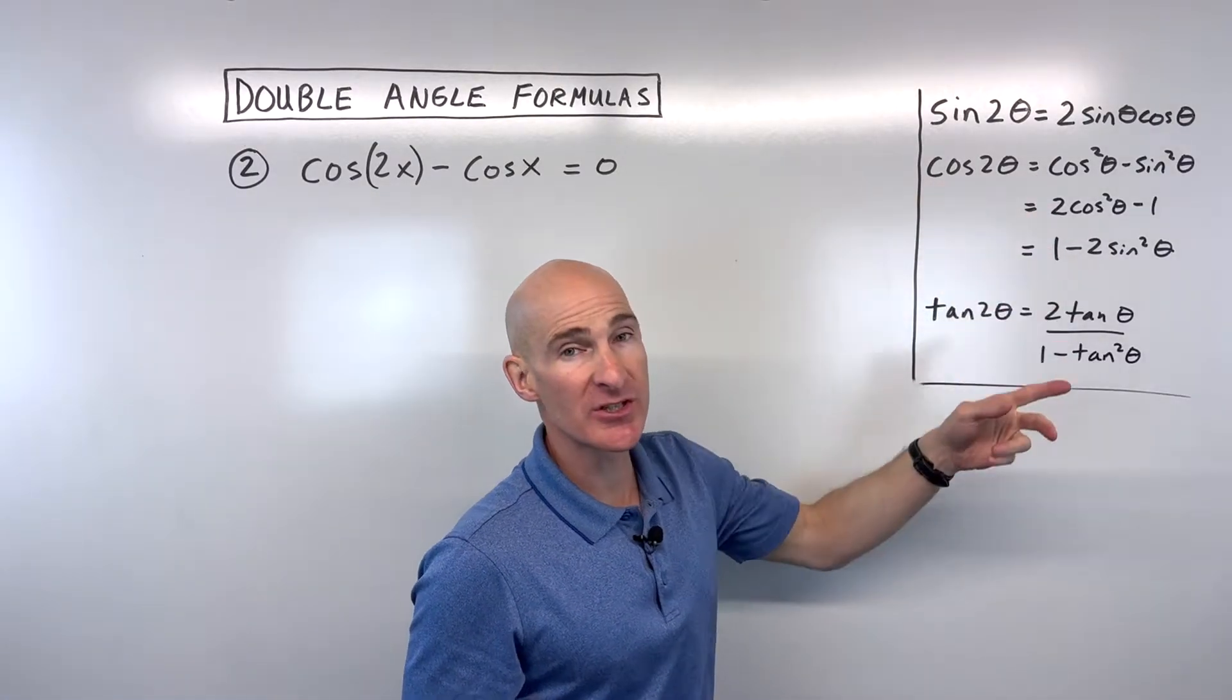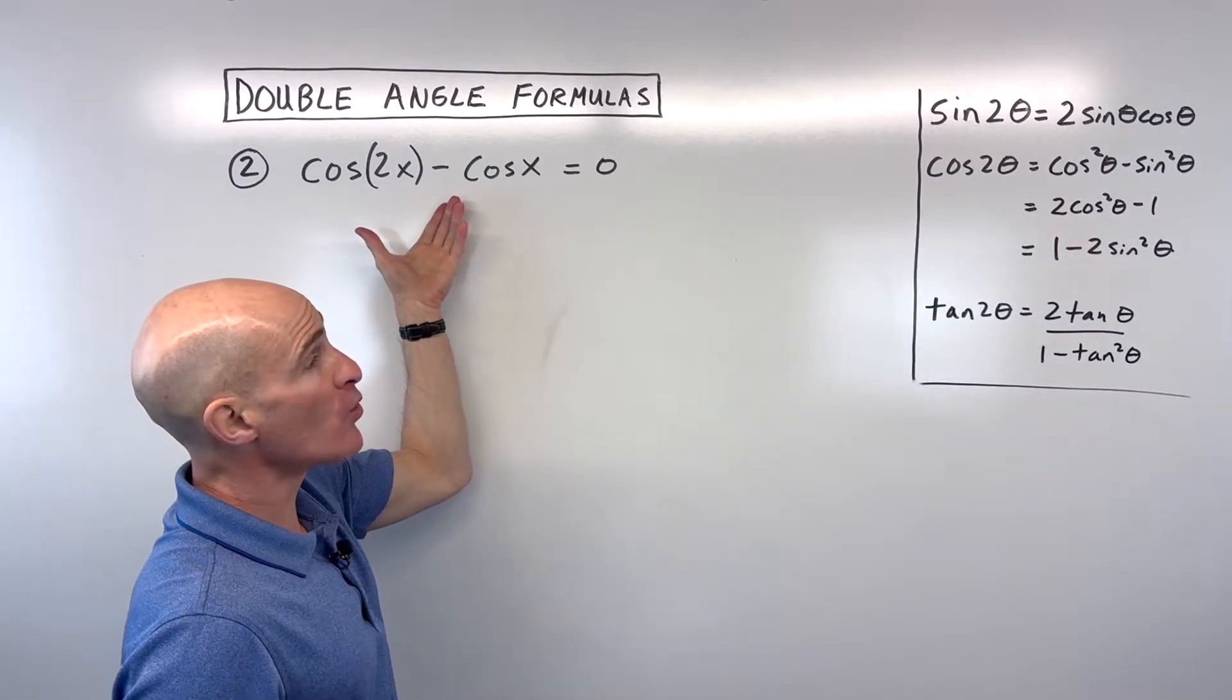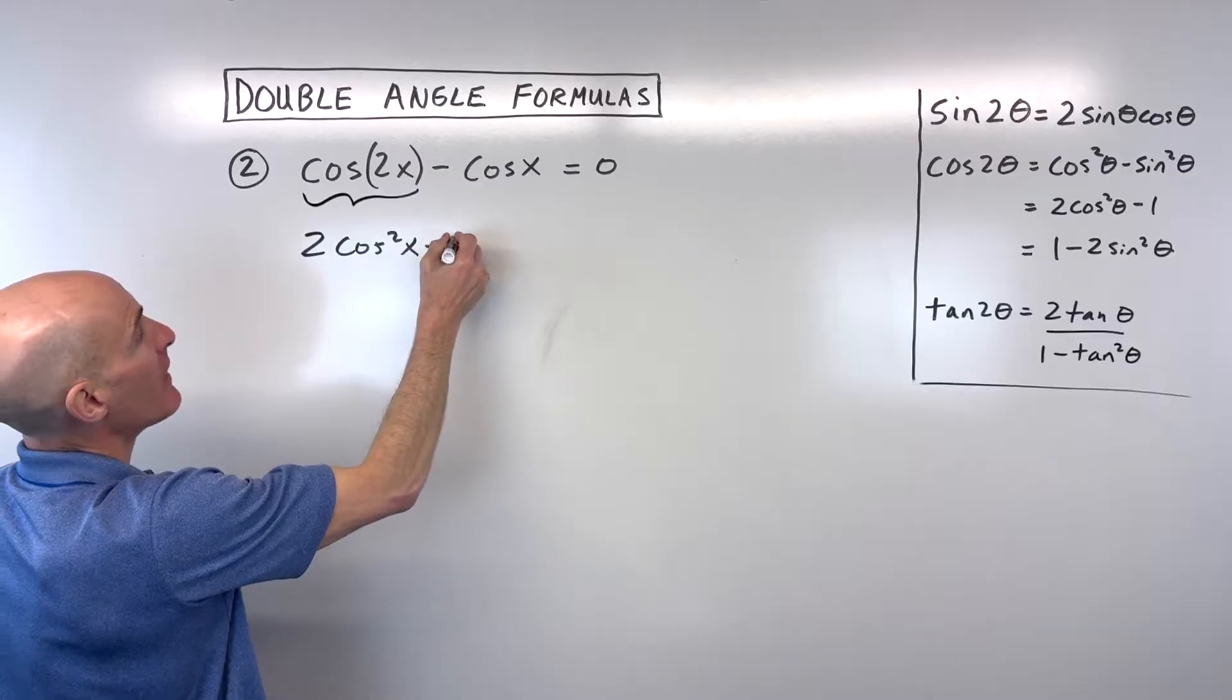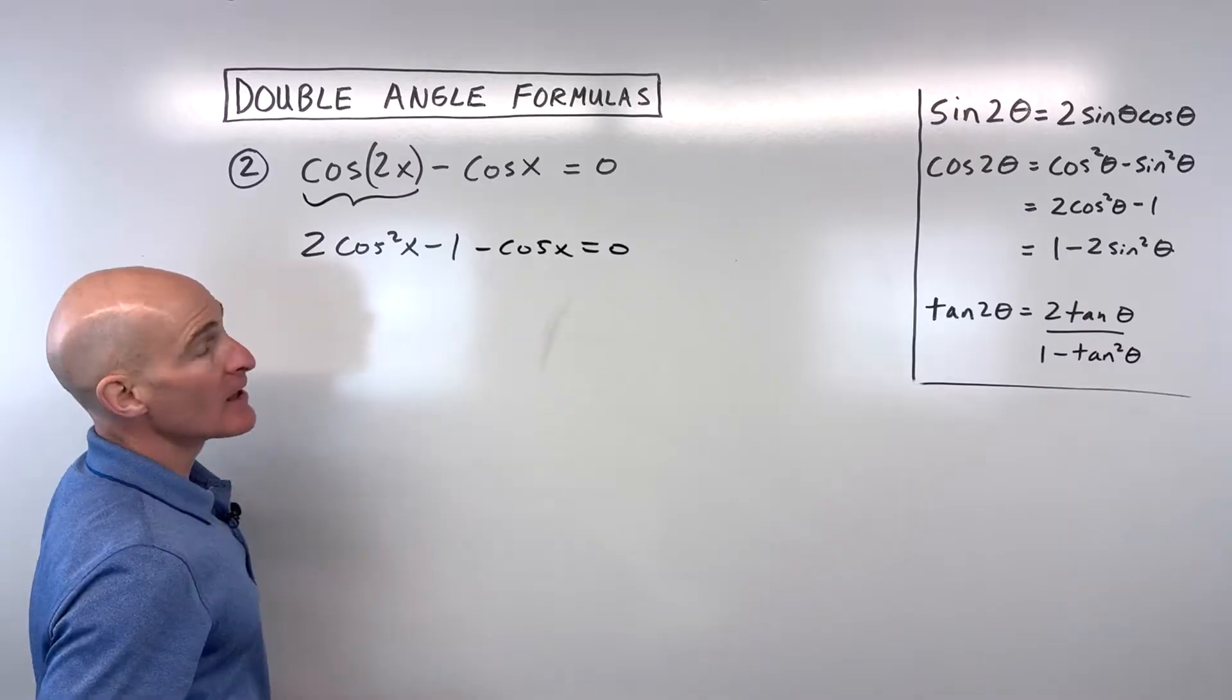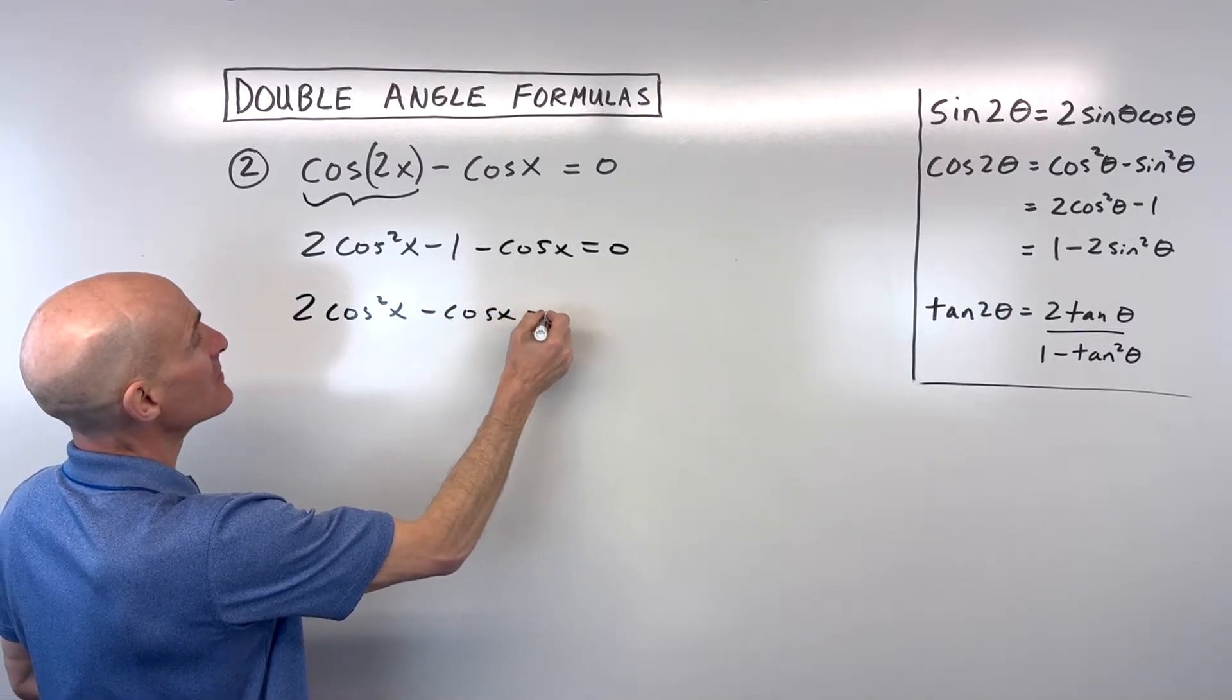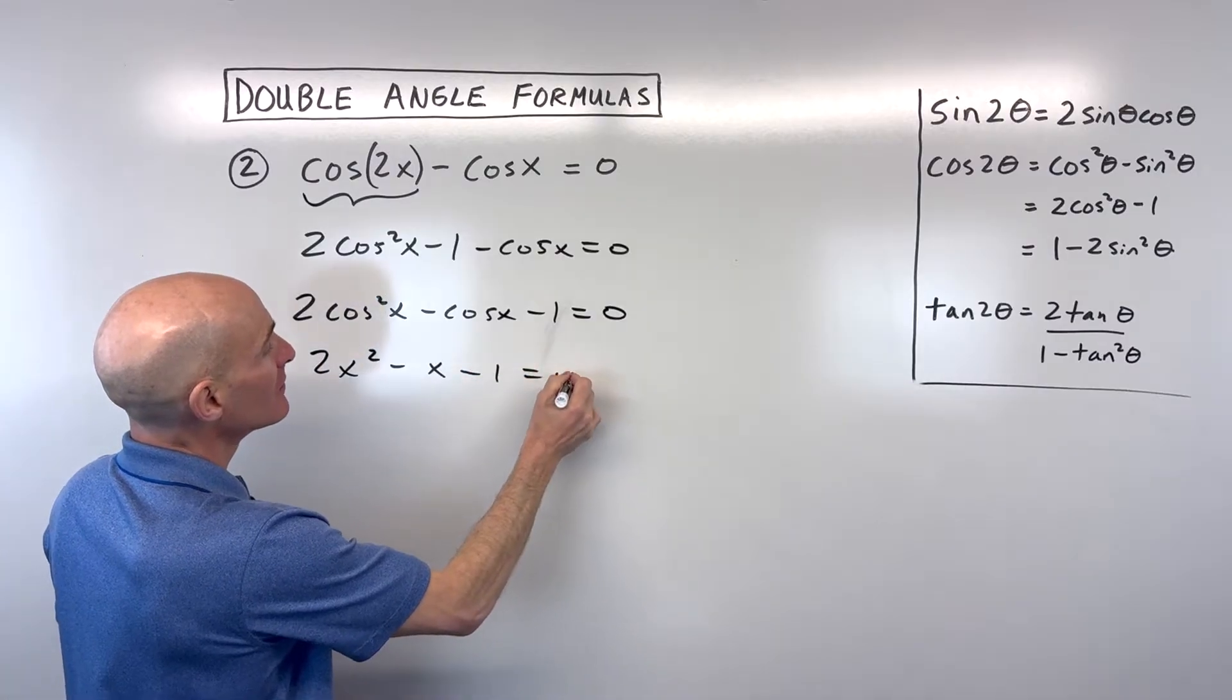We're going to use the cosine double angle formula. Again, we have three choices. So we want to be strategic here. A good substitution would be to use this middle one. This will allow us to get everything in terms of just one trig function, cosine. So let's replace this with 2cos²x - 1, then minus this cos x here, equals zero. Now let's write this a little differently: 2cos²x - cos x - 1 = 0.